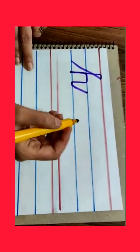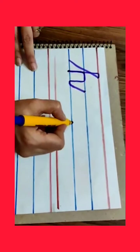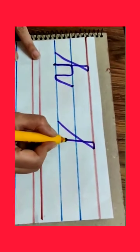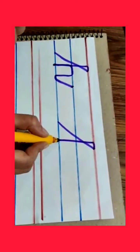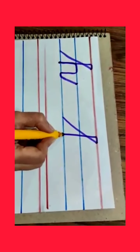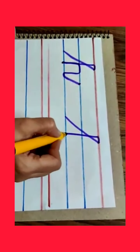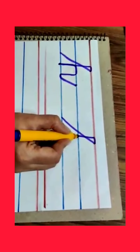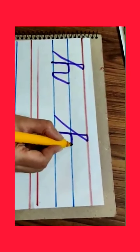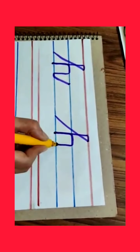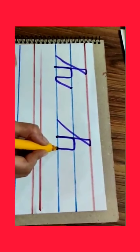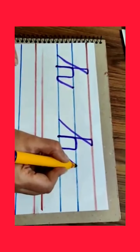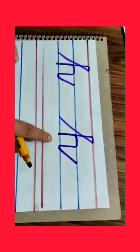H says 'her'. Again I will explain: slant line till the red line, small curve, slowly downward like a 1 — ek ki tarah aani chahiye. Stop here. Then slowly go upward till the upper blue line, make a small curve, slowly go downward, touch the lower blue line, make a curve, then slowly go upward and touch the upper blue line. Letter H.